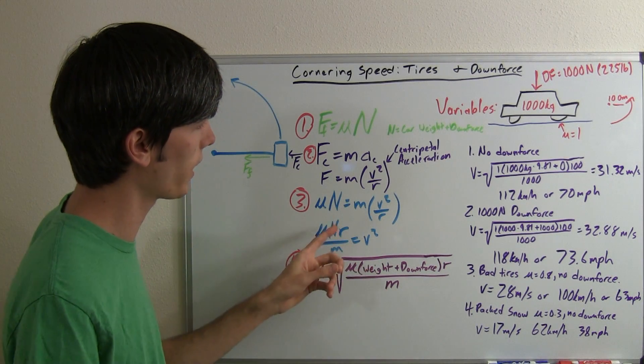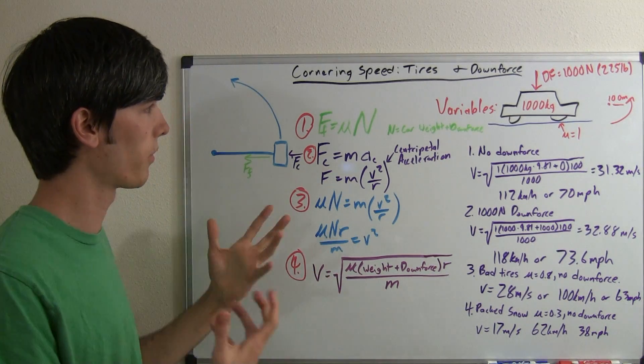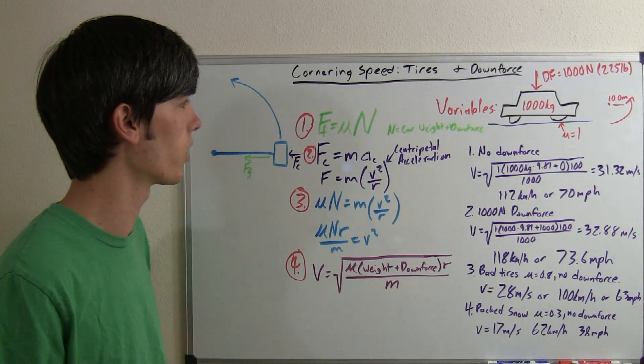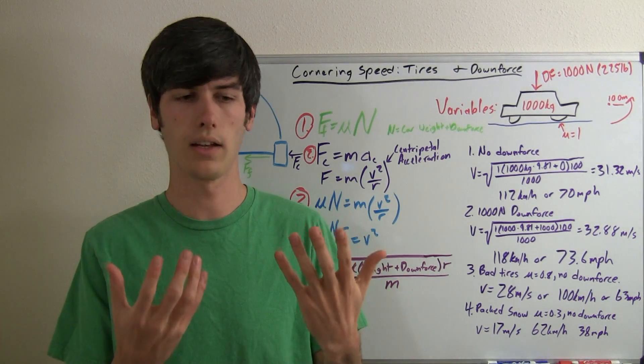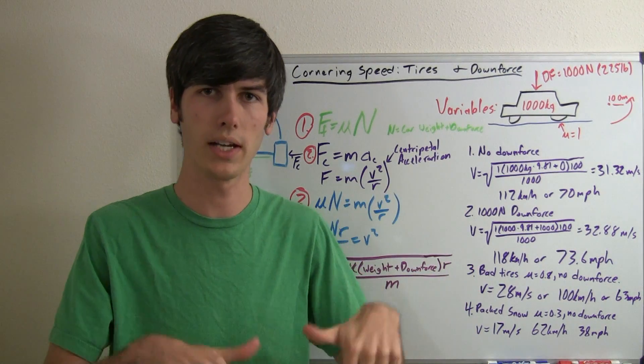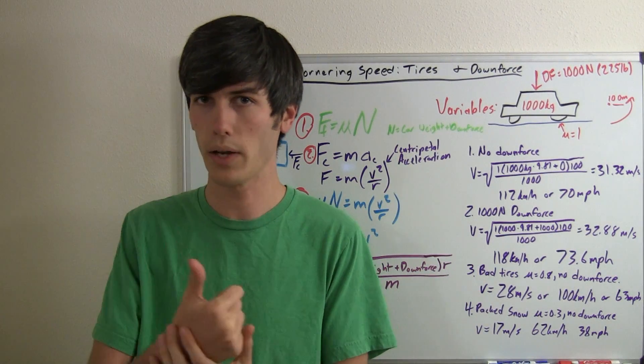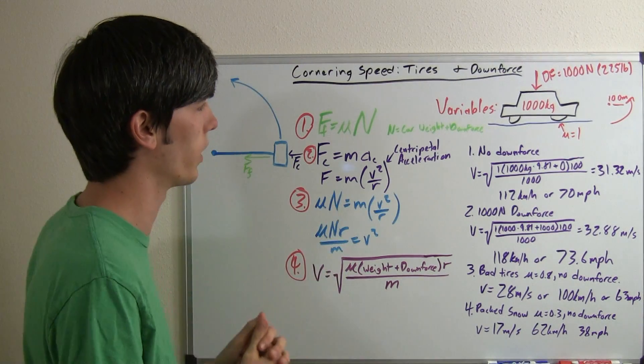And I've substituted in for n, n is equal to the car weight plus downforce. If you've watched my video on downforce, I've kind of gone into a little bit greater detail. But basically normal force is the force that the ground is pushing up on the car. So that's equal to the vertical force pushing down on the car. That's going to be equivalent to the weight of the car plus the amount of downforce that you have. Or if you have lift, it would reduce it.